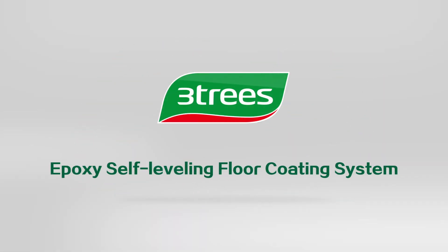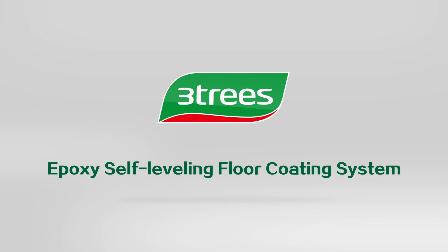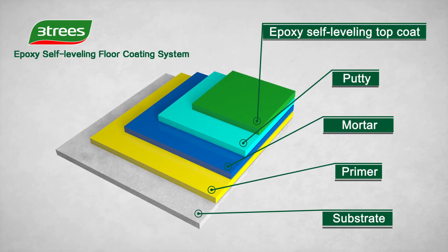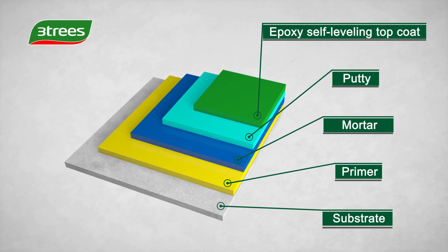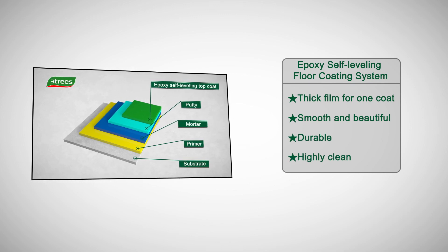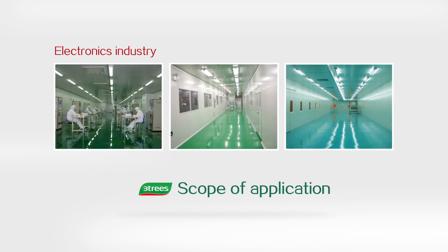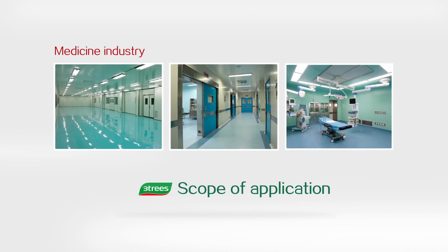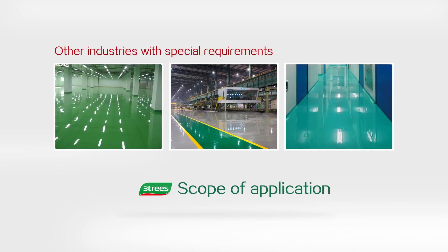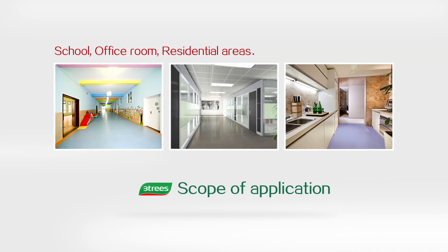Here, we give you a detailed introduction of 3T Spend Epoxy Self-Leveling Floor Coating System. This system consists of primer, mortar, putty and epoxy self-leveling top coat. It has multiple advantages such as thick film for one coat, smooth and beautiful, durable and highly clean. It can form a flat and smooth coating. Suitable for electronics and medicine industry where it requires high level of cleanliness, dust-free and germ-free, other industries requiring anti-abrasion and anti-impact, as well as schools, office rooms and residential areas.